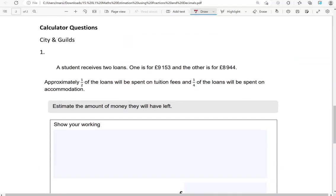We're now moving to the calculator questions. A student receives two loans. One is for £9,153 and the other is for £8,944. Approximately half of the loans will be spent on tuition fees and a quarter of the loans will be spent on accommodation. Estimate the amount of money they will have left.